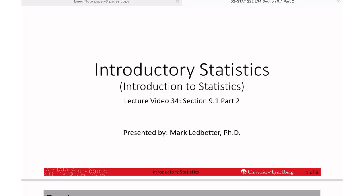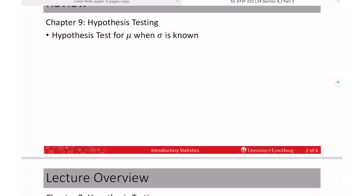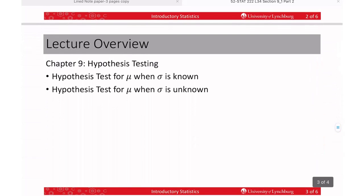Welcome back to our series on introductory statistics. I'm Mark Ledbetter. This is lecture video 34. We are in section 9.1, part 2, and we are talking about how to test hypothesis for the mean, the population mean, when sigma is known.